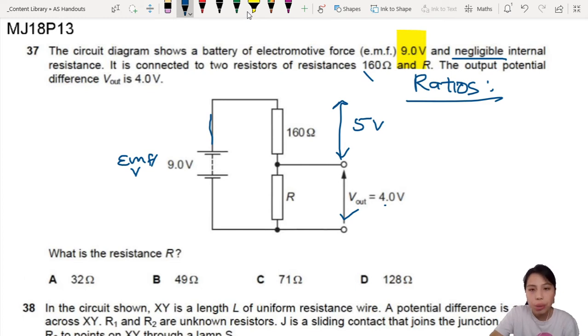When you think of ratios, the ratio of this section over this section, the drop will be 5 volts over 4 volts, right? That is the same ratio as this resistance over R. So 160 ohm over who knows what ohm. These are ratios.